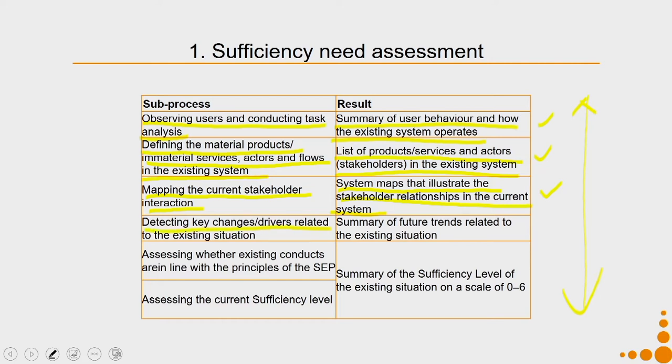Then we detect the key changes or drivers related to the existing situation — a summary of future trends. For example, if a main ingredient of a very popular drink is imported, there is a high risk: can I start producing that ingredient in-house? Or if I realize that being a resort, my expenditure on cleaning products is extremely high — one of the biggest components of expenditure — what can I do to create self-reliance or bring in moderation? Or if I find that a lot of water is wasted, I want to bring in moderation, reasonableness, and self-immunity so that the resource of water always flows through.